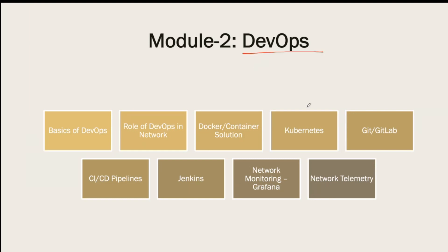Next we will move to DevOps, which is a very integral part of Net DevOps. We'll start from the basics of DevOps — what exactly DevOps is, how this DevOps story came into the picture, what are the different tool sets available, and what is the role of DevOps in our network automation journey.